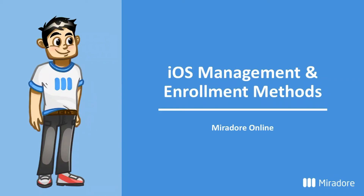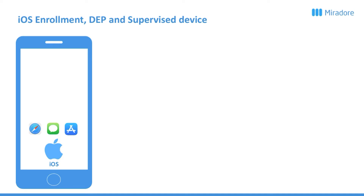Hi, and welcome to this video on iOS management and enrolment methods. iOS enrolment can be done post-setup, which means that you will go through the setup wizard after starting the phone, and when you get to the home screen, you can start the enrolment. Unlike enrolling Android phones, this does not require you to install our client.